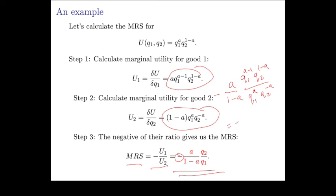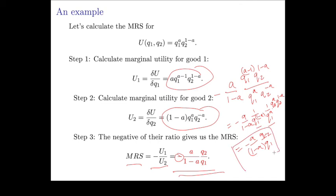We can rewrite that as minus a over 1 minus a, times Q1^(a−1) divided by Q1^a — which is 1/Q1 — times Q2^(1−a) divided by Q2^(−a) — which is Q2. When we multiply Q1^(a−1) and Q1^(−a) together we just get 1/Q1, and the Q2 terms give just Q2. So the marginal rate of substitution simplifies to: negative (a over 1 minus a) times (Q2 over Q1).